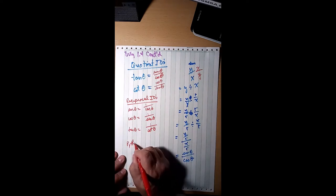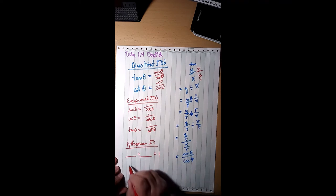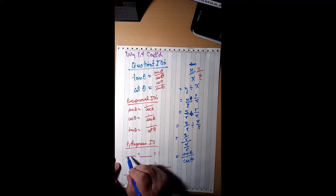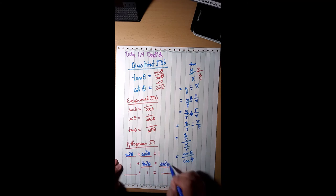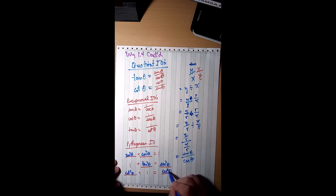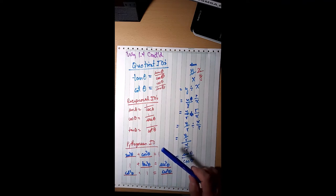Let's write down all the identities together. The quotient identities: tan θ = sin θ / cos θ and cot θ = cos θ / sin θ. The reciprocal identities: sin θ = 1/csc θ, cos θ = 1/sec θ, tan θ = 1/cot θ. The Pythagorean identities: sin²θ + cos²θ = 1, 1 + tan²θ = sec²θ, and cot²θ + 1 = csc²θ. This is what your quiz will look like.